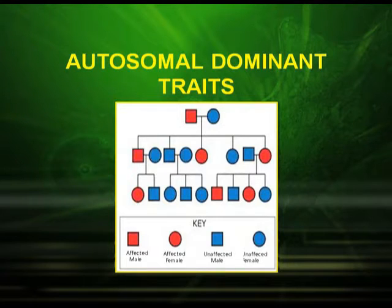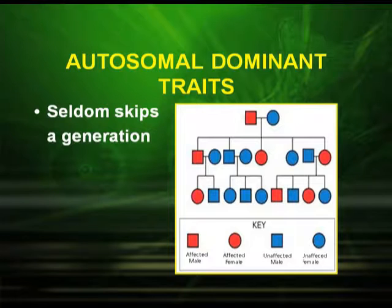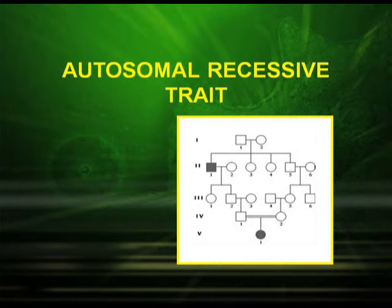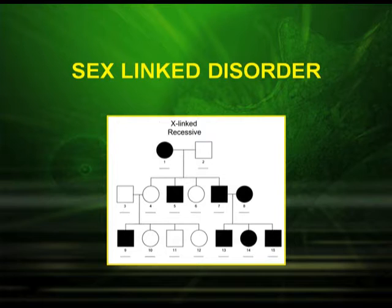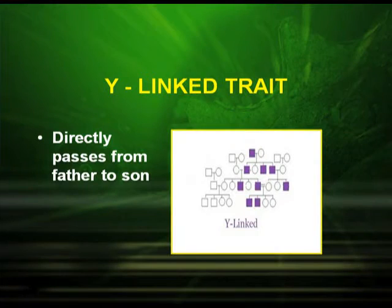The following chart shows autosomal dominant. A very important question: how to differentiate whether it is autosomal or sex-linked. In the case of autosomal dominant trait, it seldom skips a generation — the trait appears in every generation. In the case of autosomal recessive trait, it skips a generation; only homozygous recessive genes occur, and the example is sickle cell anemia. In sex-linked disorder, the trait is linked to the sex chromosome, especially the X chromosome. The next type is Y-linked trait, where the trait passes directly from father to son.